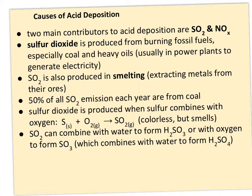The two big culprits in acid deposition are SO2 (sulfur dioxide) and the nitrous oxide compounds. Sulfur dioxide comes mostly from burning fossil fuels, especially coal. Heavy oils to some degree, but in this country coal is the big culprit, and coal is usually burned to produce electricity. SO2 is also produced in smelting, the process used to extract metals from ores. About 50% of all SO2 emissions each year are from coal, mostly from electricity production.